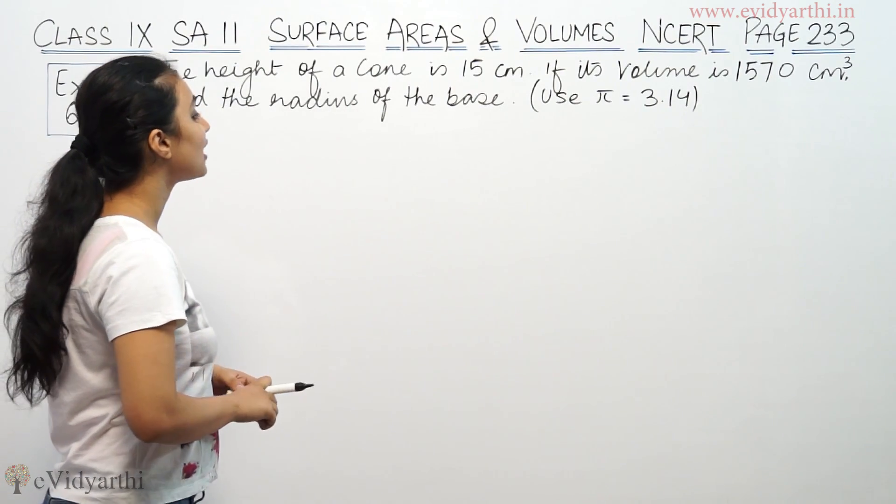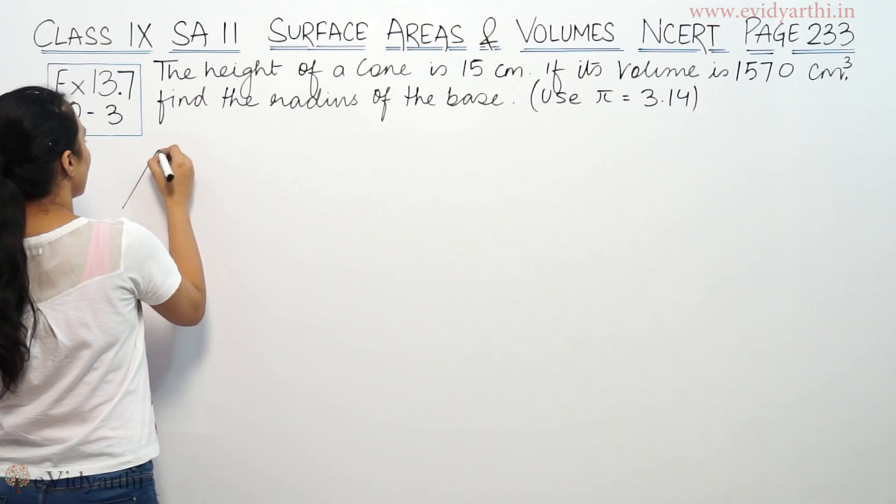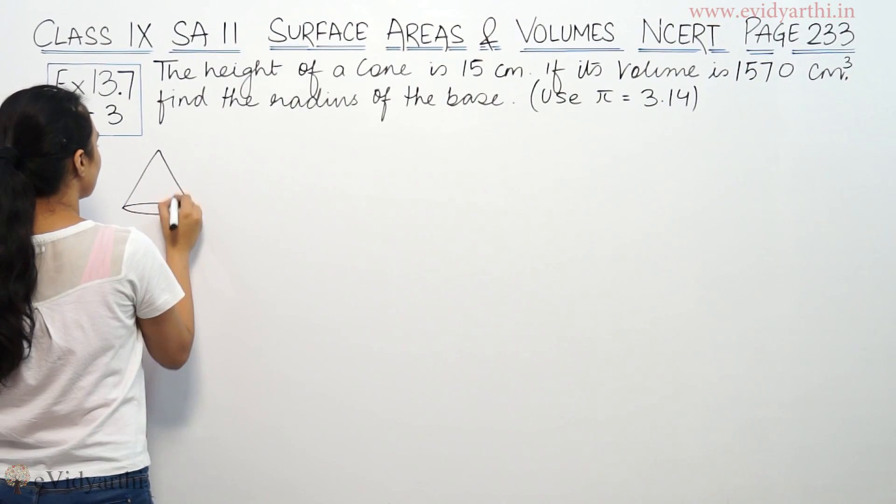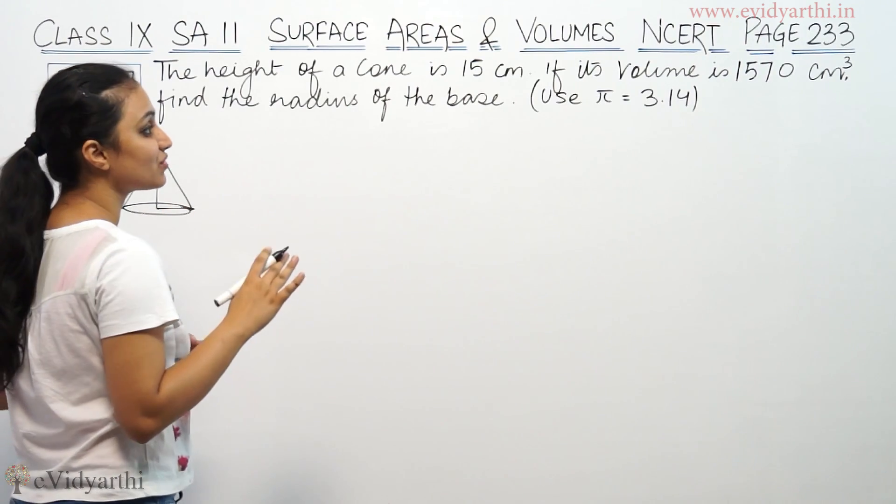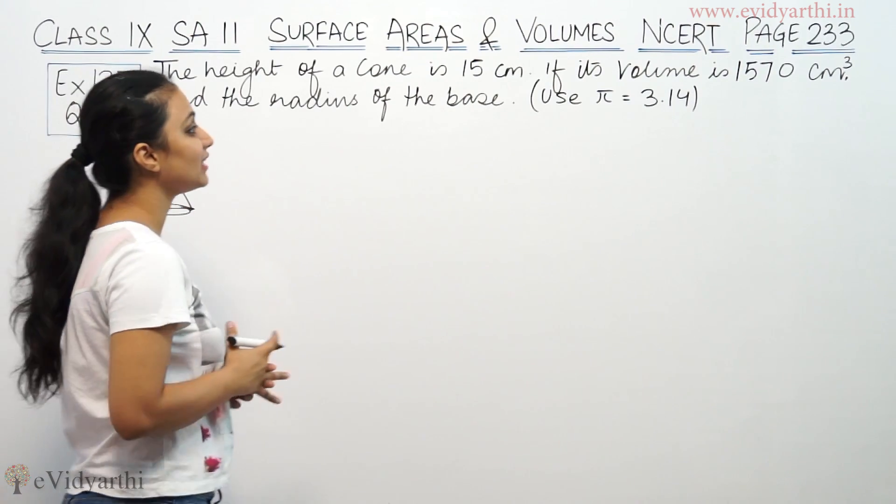It says the height of a cone is 15 cm. So this is a cone. If its volume is 1570 cm³, find the radius of the base.